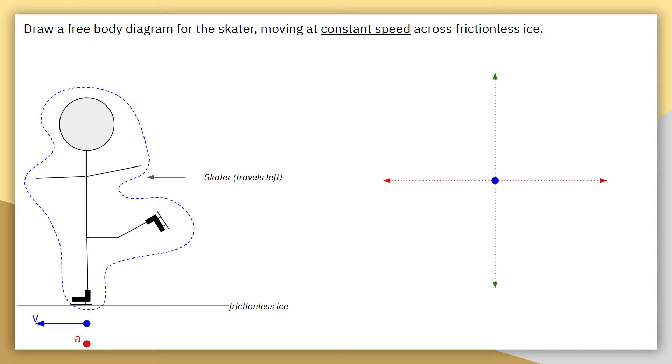So the first force that I will typically have on every single free body diagram is the force of gravity. That is going to be a force acting on our skater, pulling them down to the center of the earth. So the labeling that I'm going to be doing is F for force, and then in subscript, the type of force, which is gravity, acting on the skater by the earth.